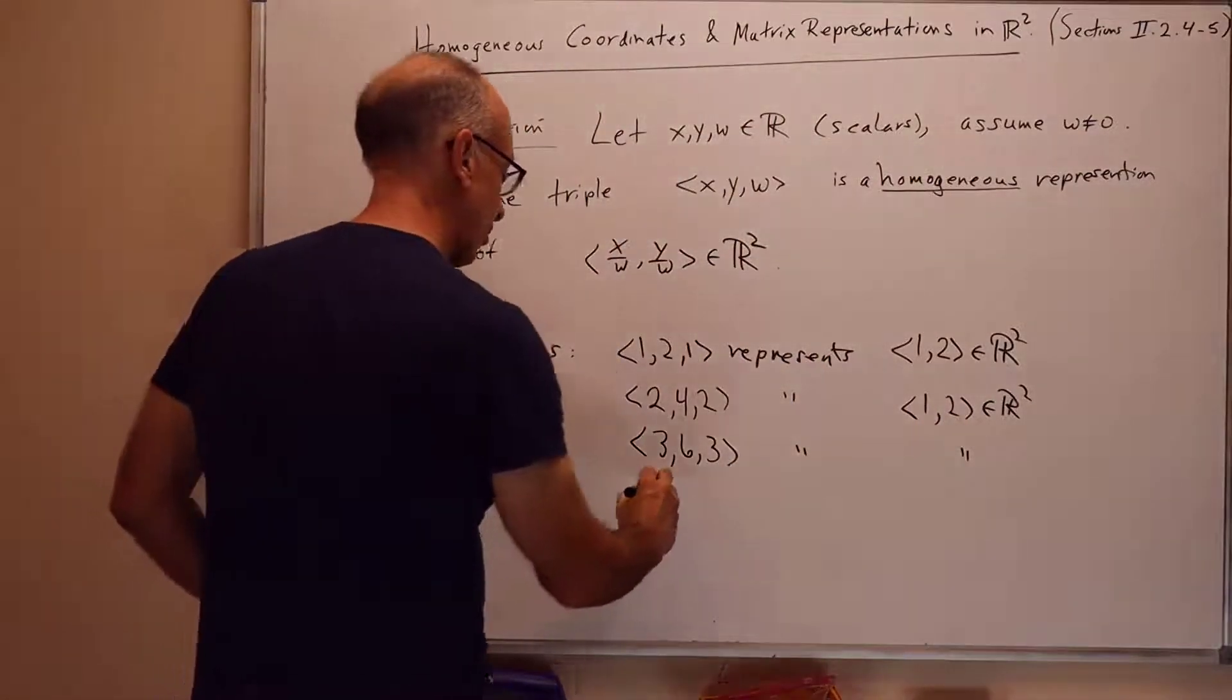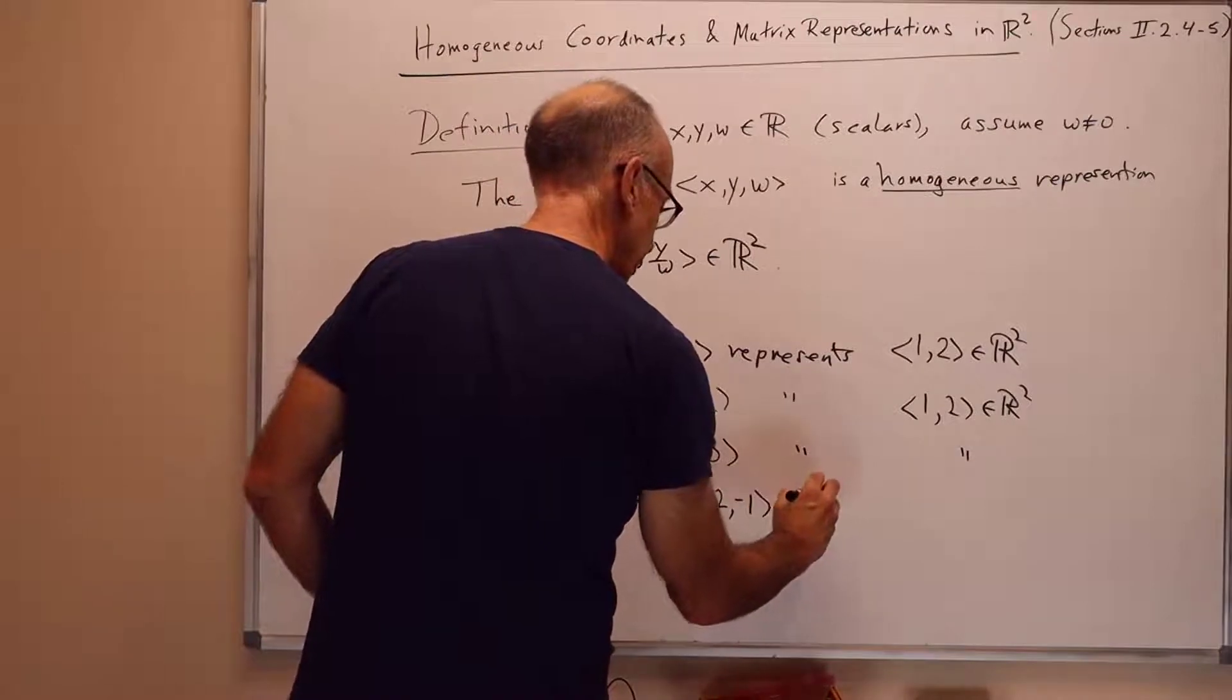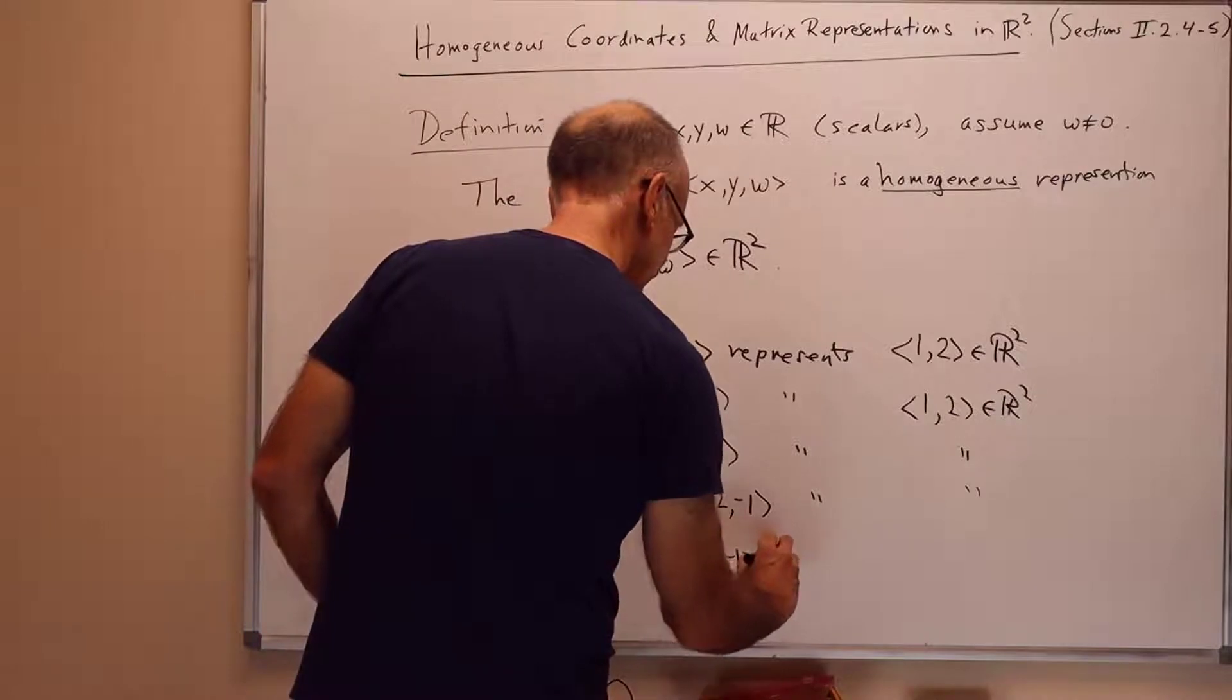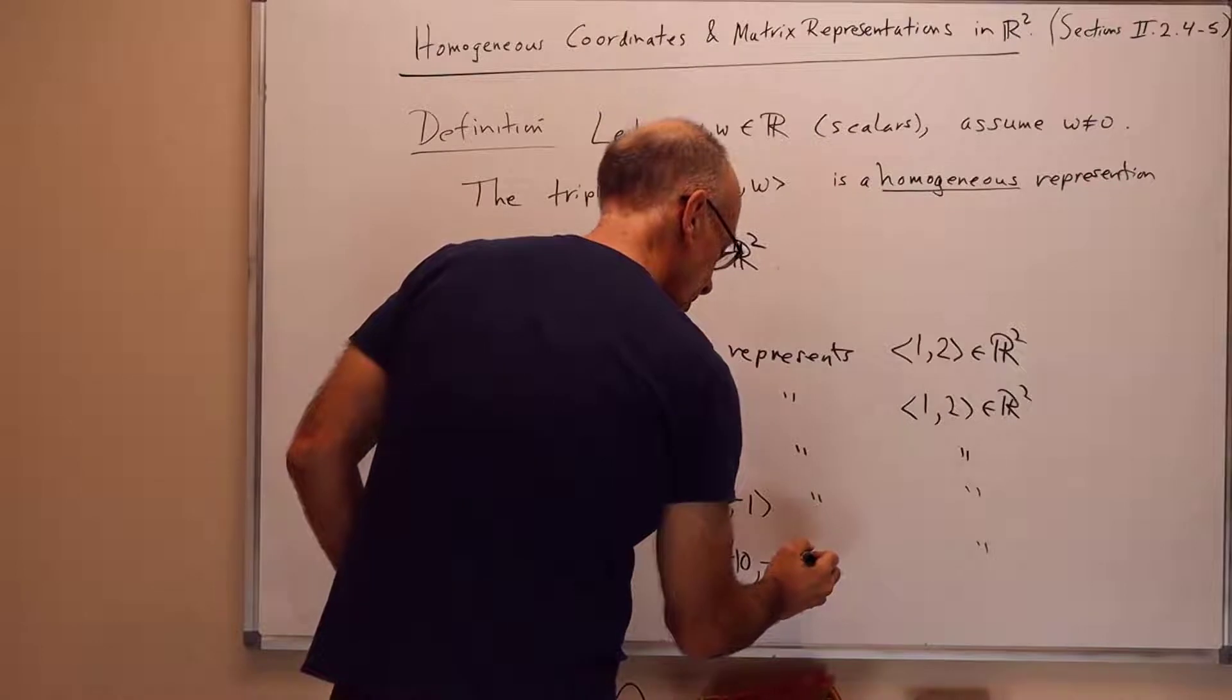We can also use negative numbers, like <-1, -2, -1> represents the same point. Or <-5, -10, -5> represents the same point.